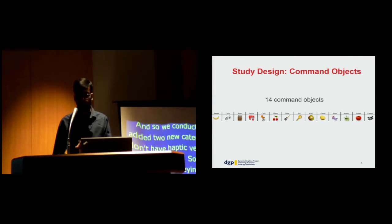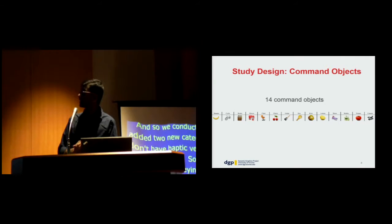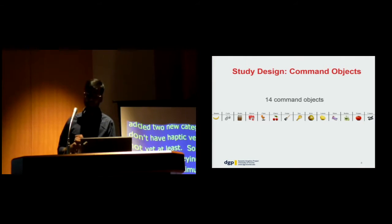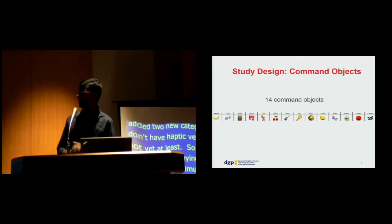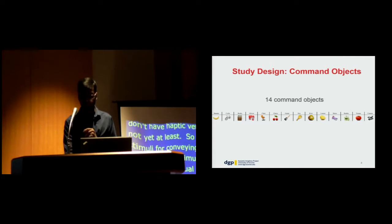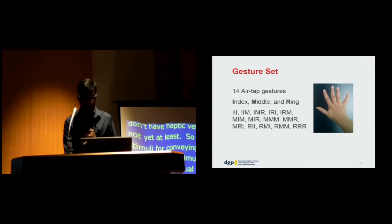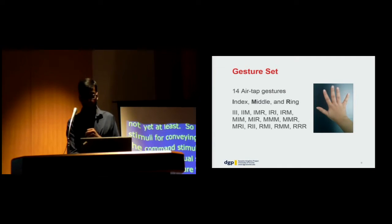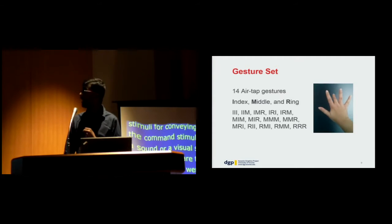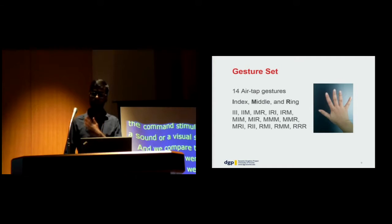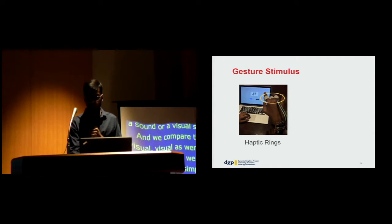We chose a command set of 14 objects which has been used in earlier studies. These are fairly simple objects. The gesture set is 14 air tap gestures using the index, middle, and ring fingers. For example, if you have an IMR gesture, it is an index tap followed by a middle tap and a ring tap.